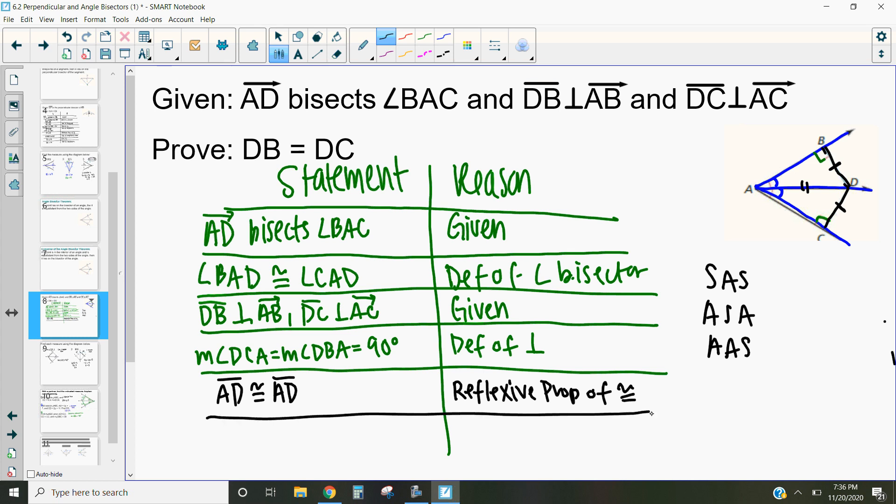So by establishing that that's congruent to itself, using those three angles, we can then say that triangle CAD is congruent to triangle BAD.